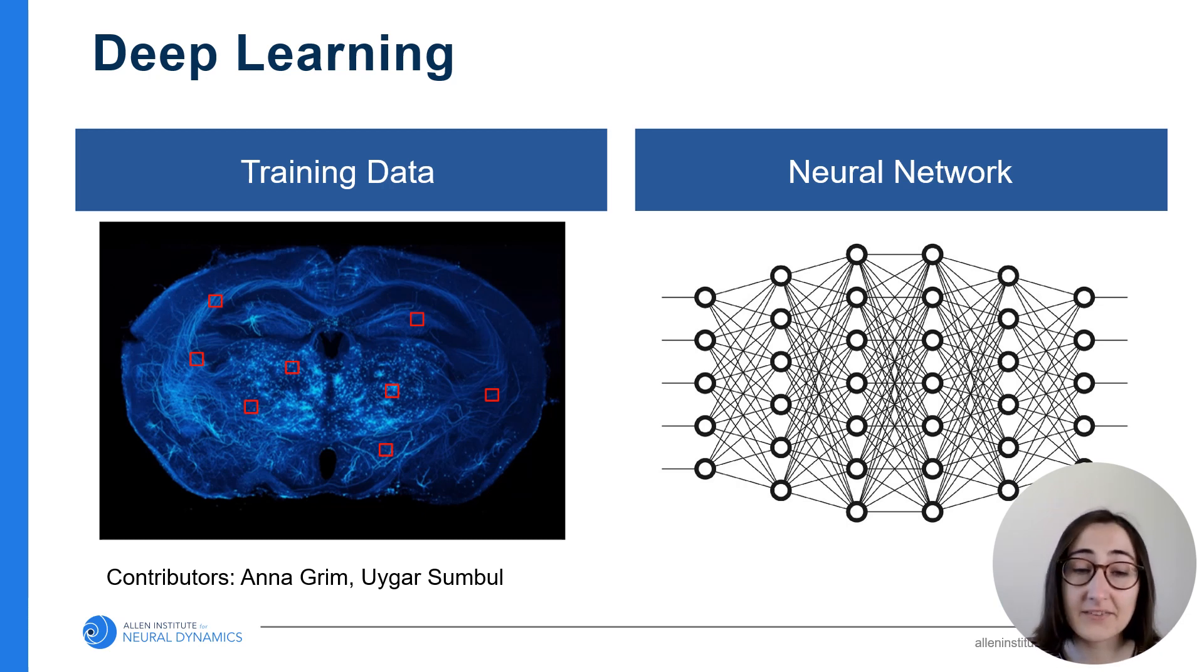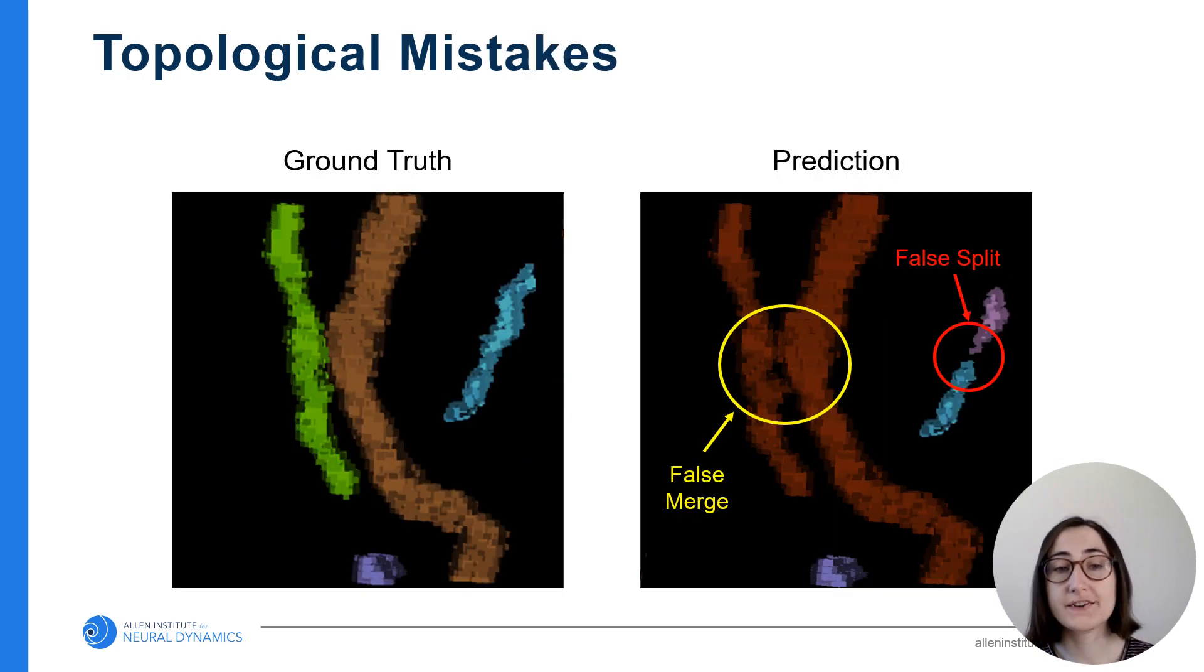This is much easier said than done. One challenge in neuron segmentation is correctly reconstructing the topology of neurons. In this context, topology refers to how neurons are connected, and there are two types of connectivity mistakes that a neural network can commonly make.